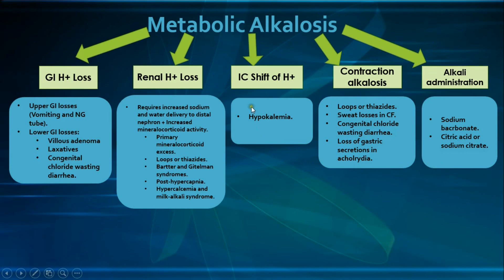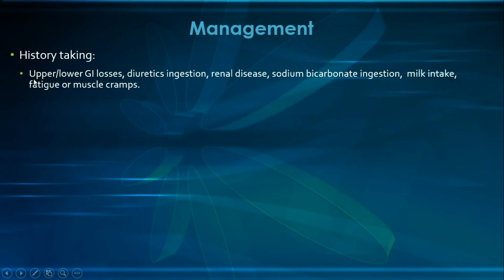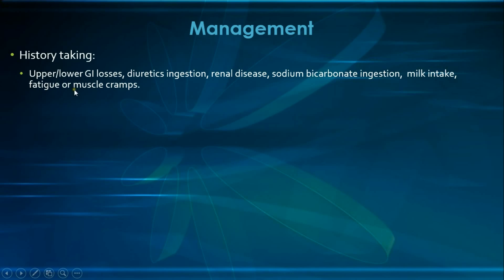For management, history taking should include: upper or lower GI losses (vomiting, NG tubes, villous adenoma, laxatives); diuretic use (loops or thiazides), which along with GI losses are the most common causes; non-renal diseases such as Bartter or Gitelman syndromes; sodium bicarbonate or milk ingestion; and symptoms like fatigue or muscle cramps, which may indicate concurrent hypokalemia.